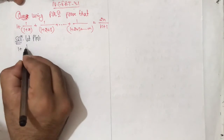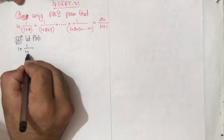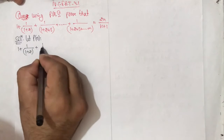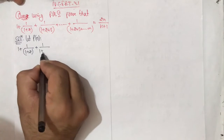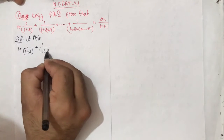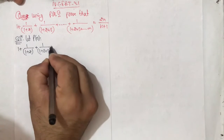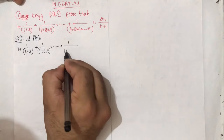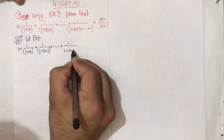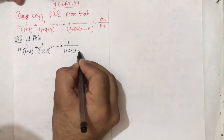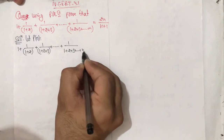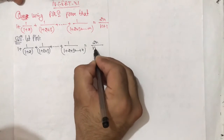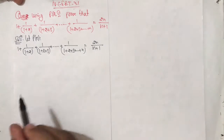We have: 1 plus 1 upon (1 plus 2) plus 1 upon (1 plus 2 plus 3) and so on, 1 upon (1 plus 2 plus 3 and so on up to n) is equal to 2n upon (n plus 1).